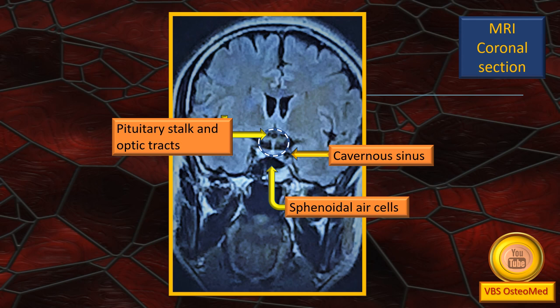Next, this is a coronal section MRI roughly at the level of the pituitary. You can see the pituitary tract and the optic tracts on either side in that central dotted circle area. On either side, you can see the cavernous sinus. Immediately below the pituitary fossa is the sphenoidal air cells.